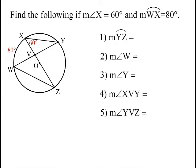So once again, why don't you pause the video here and see if you can figure out these arcs and angles. So the measure of arc YZ that is intercepted by angle X, which is 60 degrees - so we could say then that the arc has to be double that, 120 degrees.